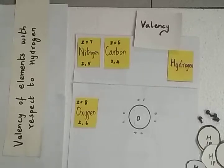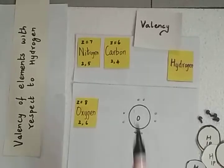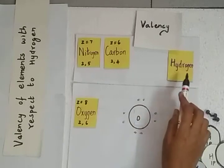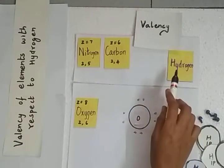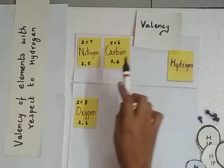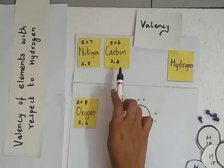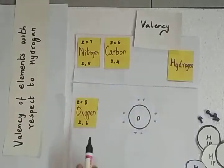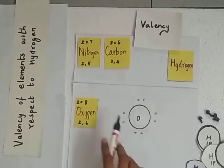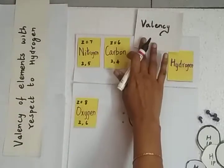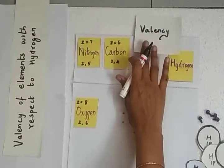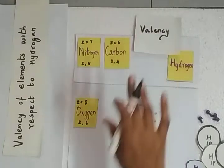In this video we will learn how to find the valency of an element with respect to hydrogen — that is the number of hydrogen atoms that an atom of an element can combine with. We already know that valency is the combining capacity of an element or an atom.